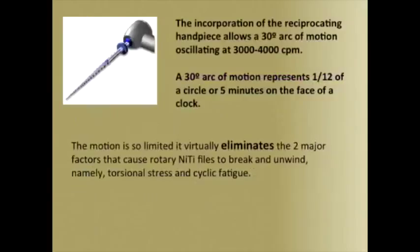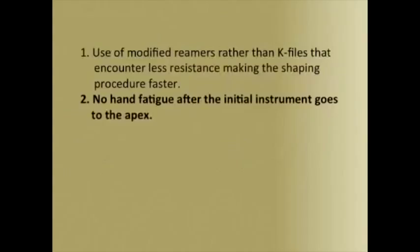It is important to appreciate that a 30-degree arc of motion generated in the reciprocating handpiece is one-twelfth of a circle, or five minutes on the face of a clock — an extremely short arc of motion that does not generate significant amounts of torsional stress or cyclic fatigue. The short arc allows for a high frequency of motion of 3,000 to 4,000 cycles per minute, providing time-efficient canal shaping. From the start, a 30-degree reciprocating system obviously eliminates hand fatigue from the beginning of the procedure, with the added assurance that separation is virtually a thing of the past.